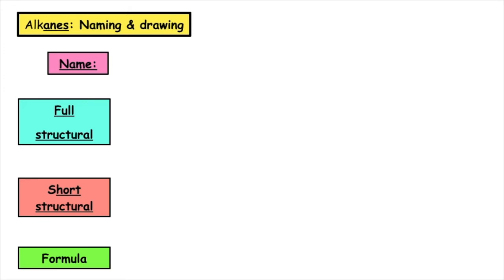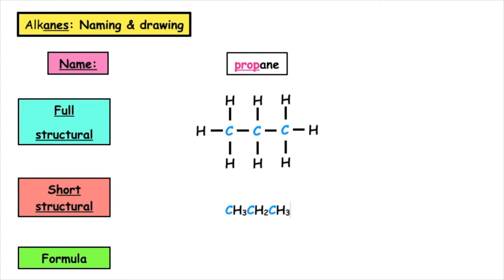So the next member we have is propane. Prop tells us that we have three carbons in our longest chain. Each carbon's got to have four lines or four bonds coming out of it, and we fill the rest out with hydrogens. If we were to draw the shortened structural formula, the first carbon is a CH3, second carbon is a CH2, and third carbon is a CH3.